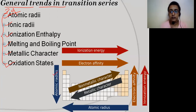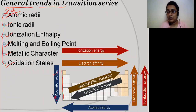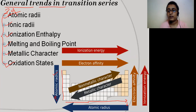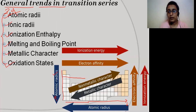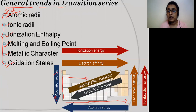First, let me give a brief idea about trends in the periodic table. Regarding atomic radius: as you go from top to bottom in the periodic table, atomic radius increases because the number of electron shells is increasing. But as you go from left to right across the period, atomic radius decreases because the number of electron shells is constant while the number of electrons in the same shell keeps increasing.